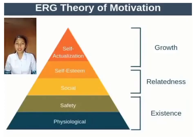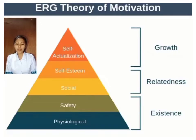ERG theory is an acronym for Existence, Relatedness, and Growth. These are the three basic needs that employees will try to satisfy in the model — as one need is filled, it will provide motivation for the employee to fulfill another need. All three needs must be satisfied simultaneously for an individual. The ERG motivation theory involves the frustration-regression principle, which impacts workplace motivation. For example, if growth opportunities are not provided to employees, they may regress to relatedness needs and socialize.